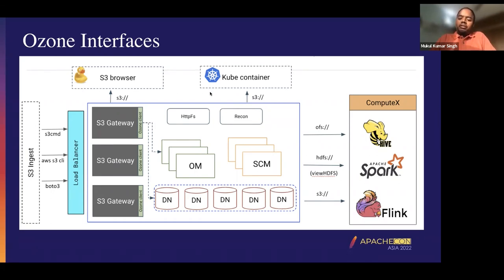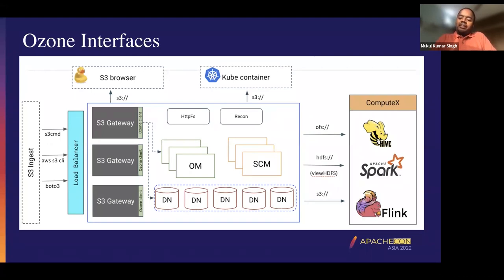Users can also access Ozone using the S3 protocol. The S3 protocol is used where a user can actually write data using their big data application where the data gets directed to the S3 gateway and the data gets written there.